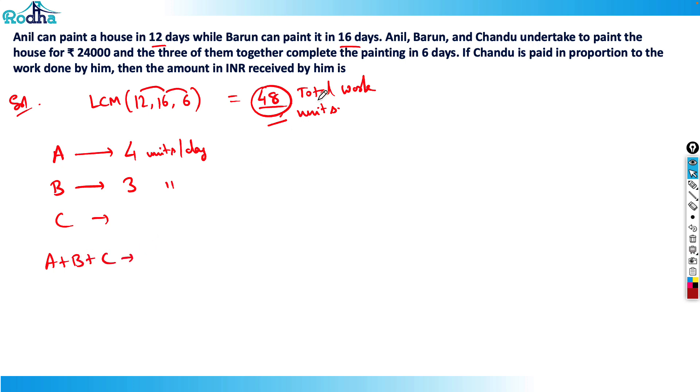C's I don't know, but I know that A plus B plus C can finish the work in 6 days. If total work is 48 units, their efficiency is 8 units per day. 4 plus 3 is 7, so obviously C's efficiency will be 1 unit per day.